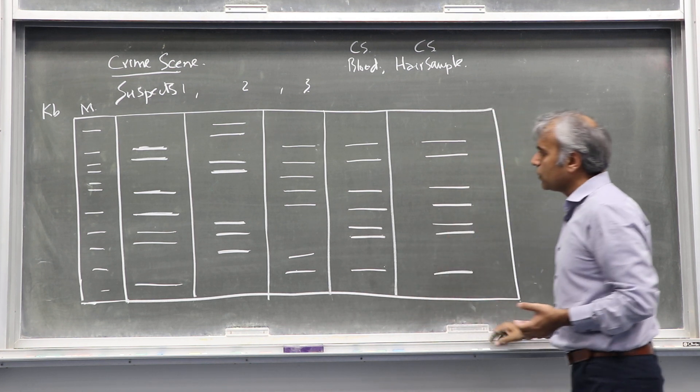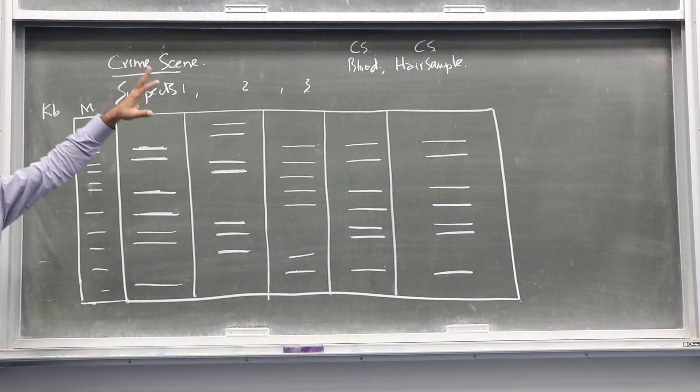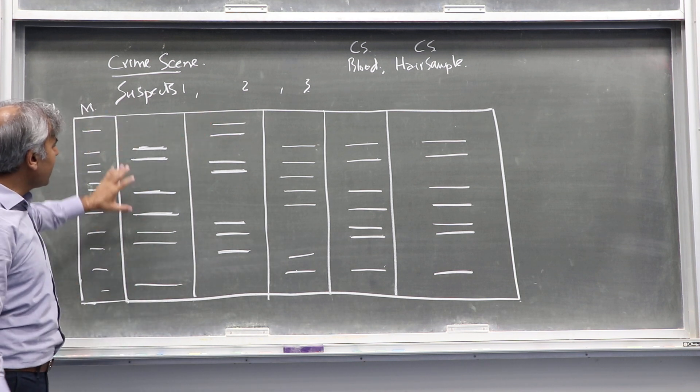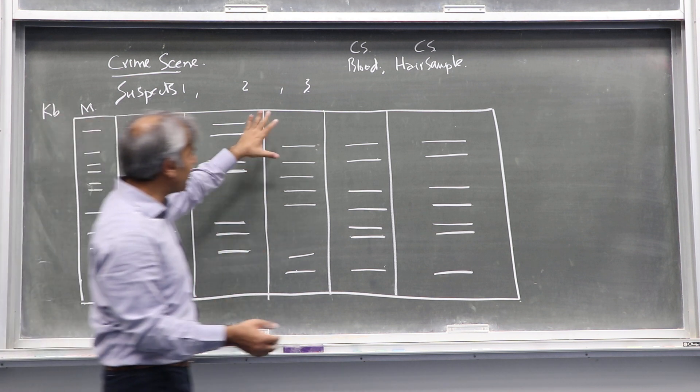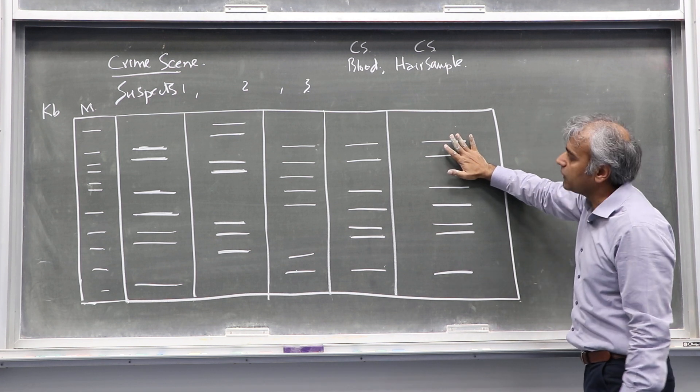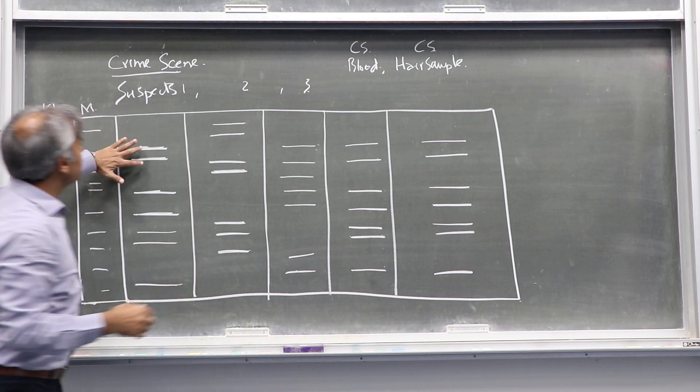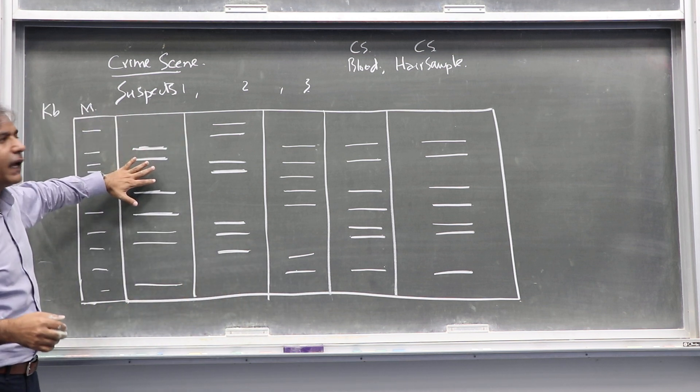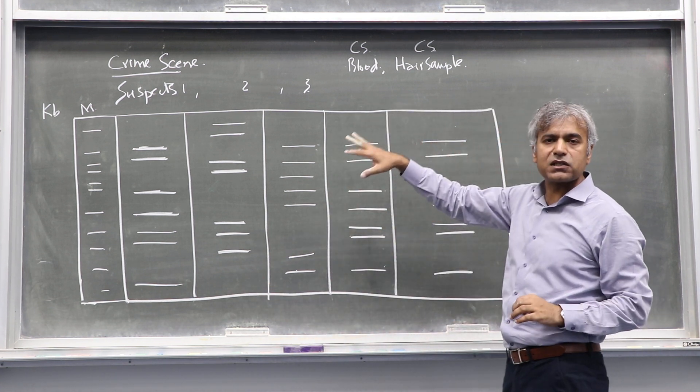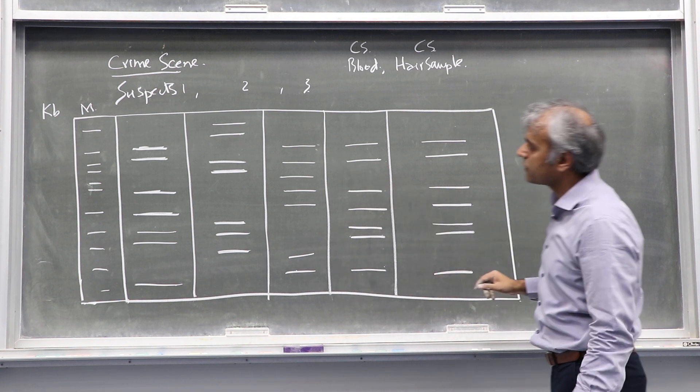On the agarose gel electrophoresis when you load these PCR products using the STR primers, you see PCR products and just looking at the pattern compared with the crime scene blood sample and hair sample, the pattern of the fragments matches suspect one. This tells us that suspect one is actually the culprit who has committed this crime.